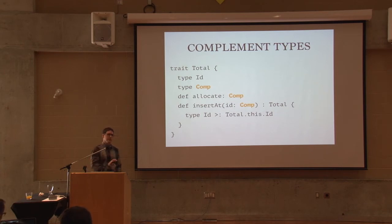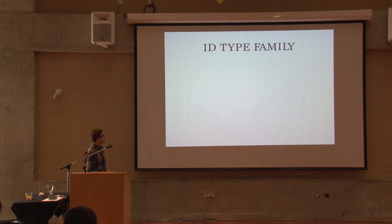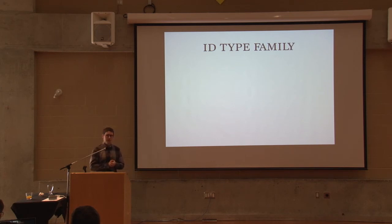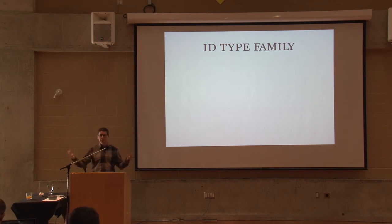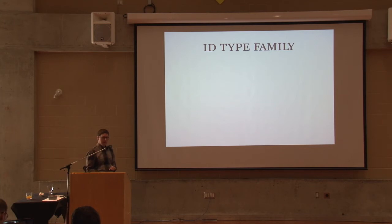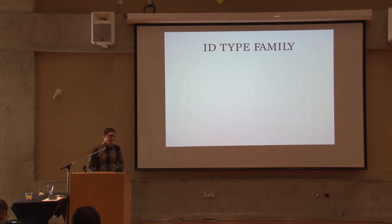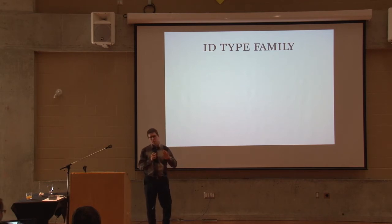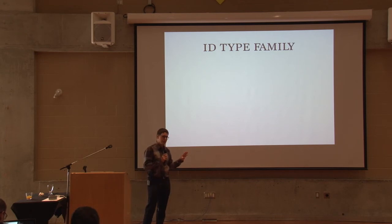We've talked about identifier types a lot in the abstract. In the abstract, there's a new identifier type which is a supertype of the previous one, but what are they really like? We need concrete types for these, at least when building the library. Let's think about an empty total map — the key type will have to be a type that does not admit any value. Can anyone think of a type that has no values in Scala?